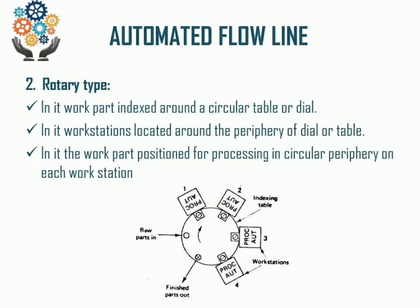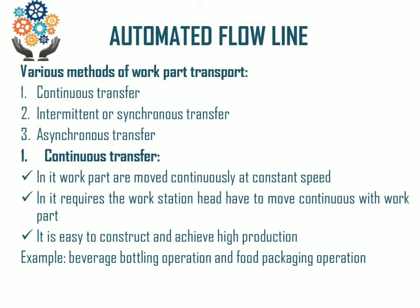In the rotary type, the work part position for processing is at the circular periphery at each work station. There are various methods of work part transport: continuous transfer, intermittent transfer, and asynchronous transfer. In continuous transfer, work parts move continuously at constant speed from one work station to another work station.